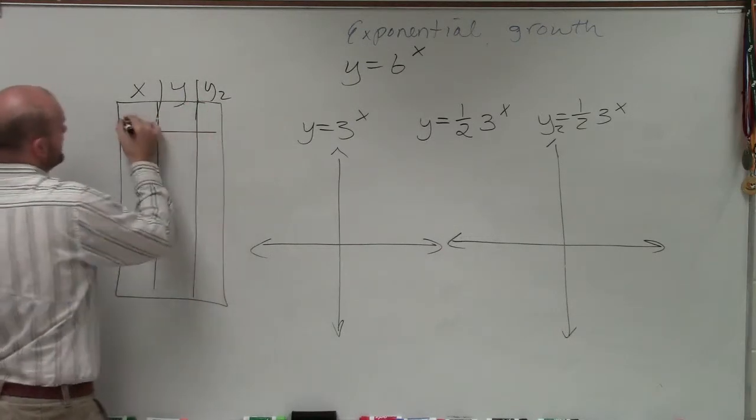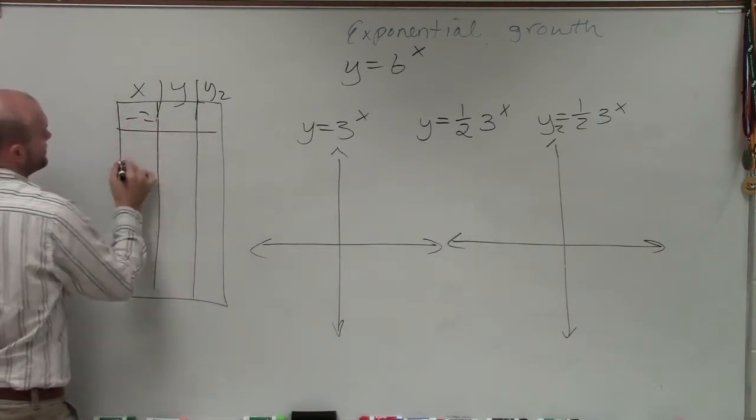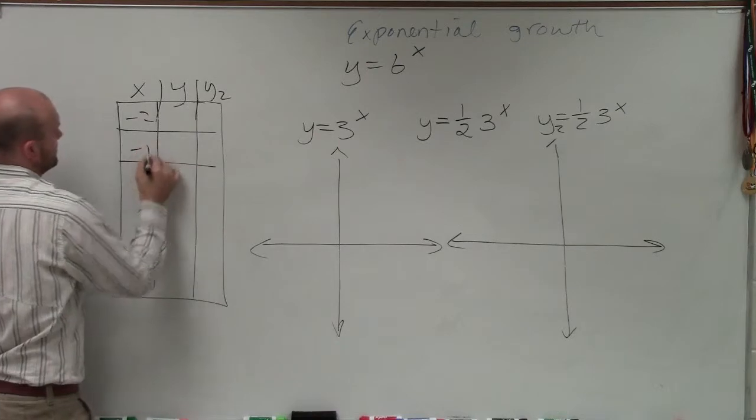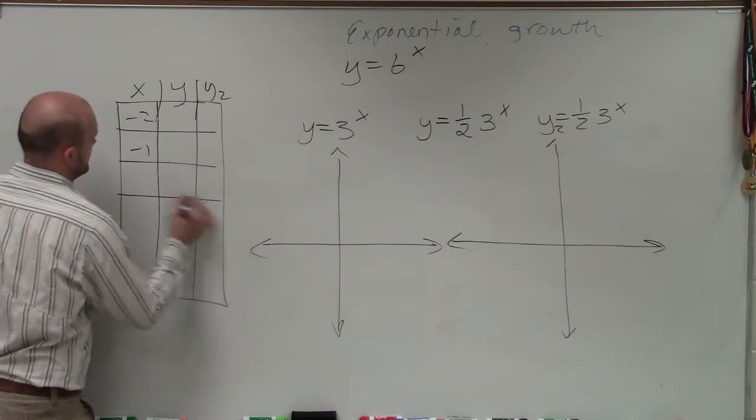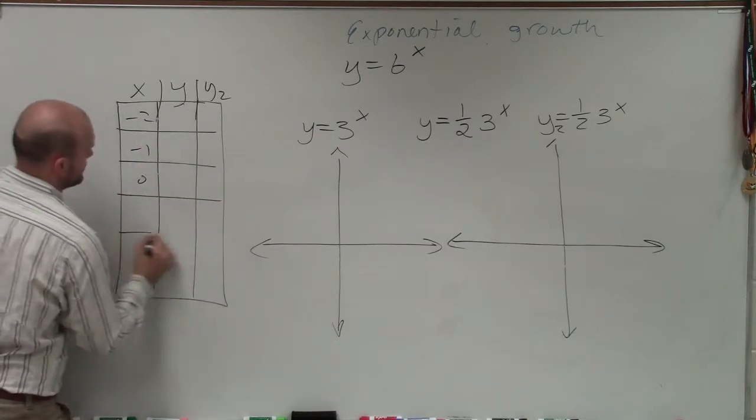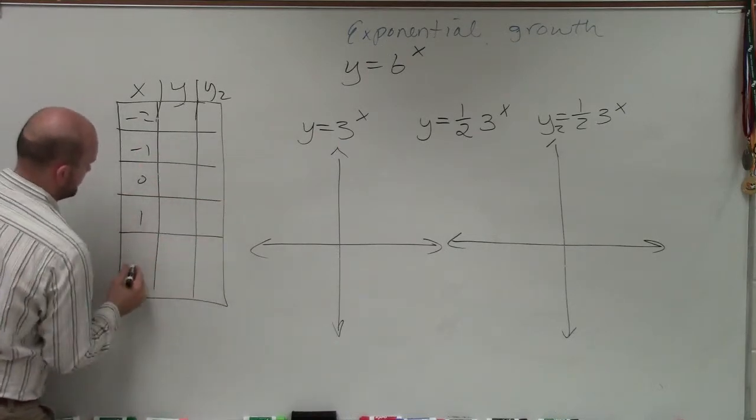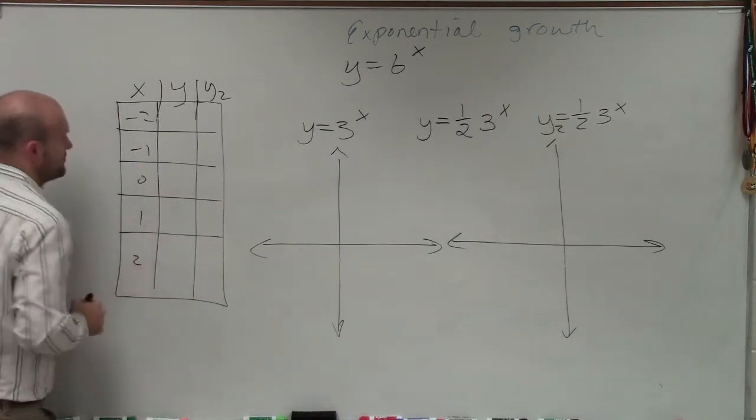So usually what I like to do is use x-values of negative 2, negative 1, 0, 1, and 2.